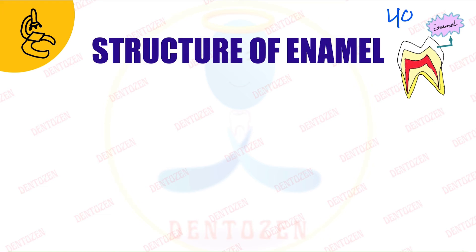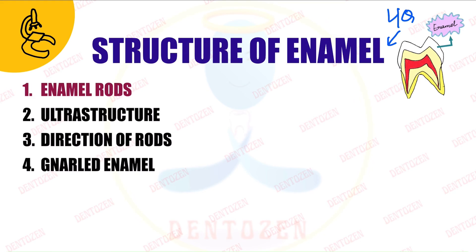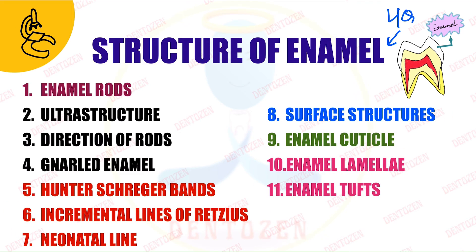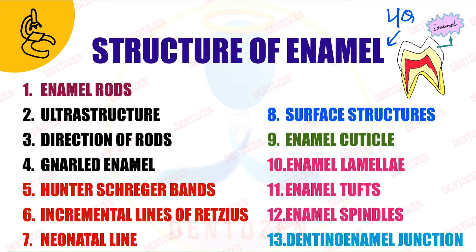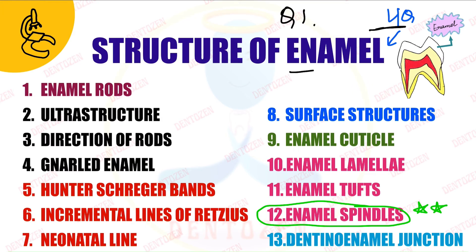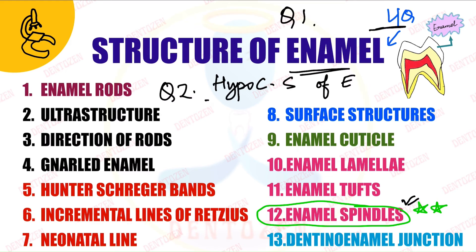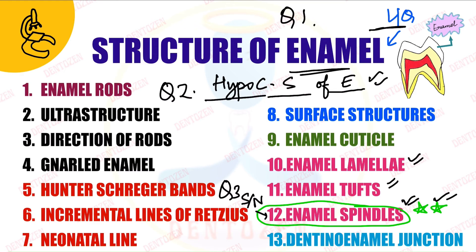There can be three questions: first, a long question on the structure of enamel where you include enamel spindles; second, a long question on hypo-calcified structures of enamel — a very important and frequently repeated question — where you include enamel spindles along with enamel tufts and enamel lamella; or third, just a short note on enamel spindles. For all three questions you will get your answer in today's video.